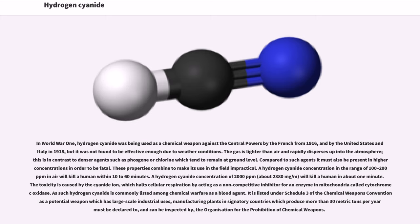A hydrogen cyanide concentration in the range of 100 to 200 parts per million in air will kill a human within 10 to 60 minutes. A hydrogen cyanide concentration of 2,000 parts per million will kill a human in about one minute. The toxicity is caused by the cyanide ion, which halts cellular respiration by acting as a non-competitive inhibitor for an enzyme in mitochondria called cytochrome c oxidase.